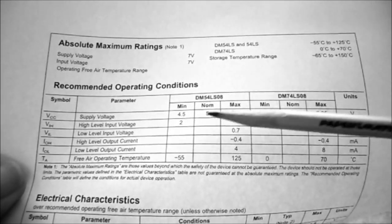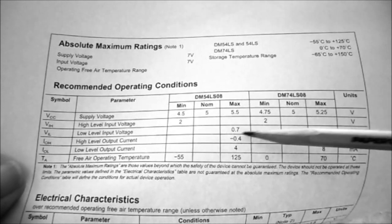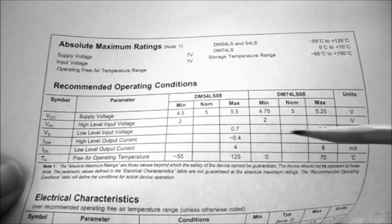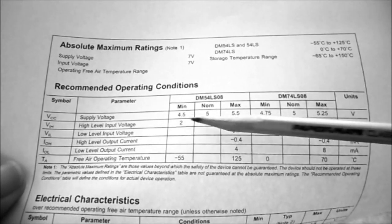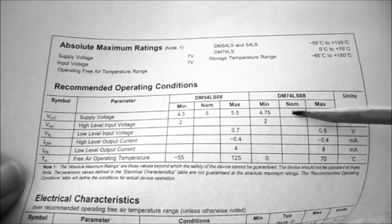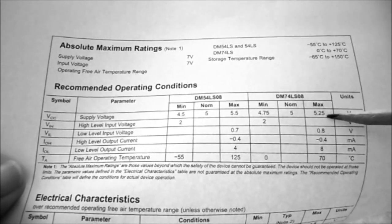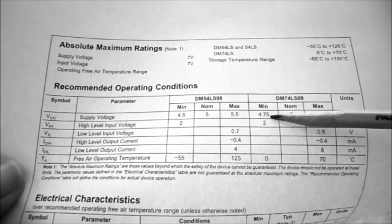And you can see in here we have high level input voltage. That's the 2 volts. The low level input voltage. That's the 0.8 volts. But you'll notice the supply voltage. A nominal is 5 volts, which is the 5 volts we're normally using. Maximum 5.25 volts. And the minimum is 4.75 volts.